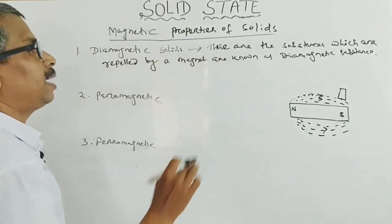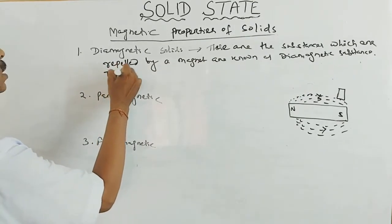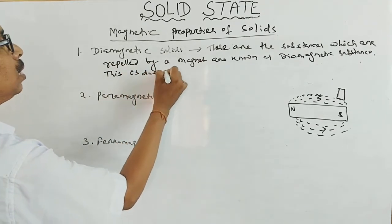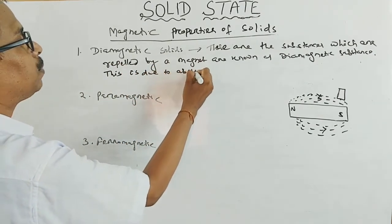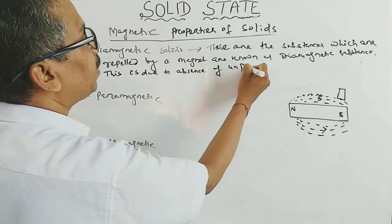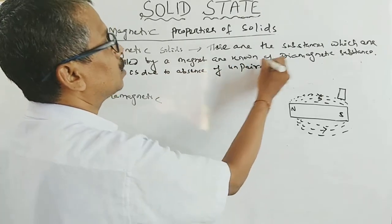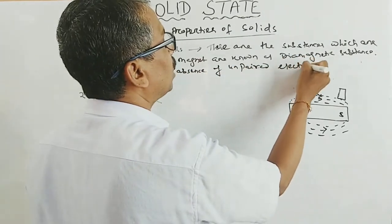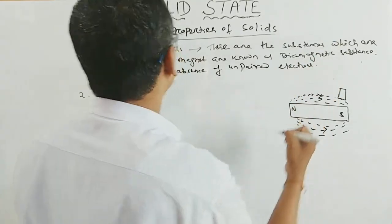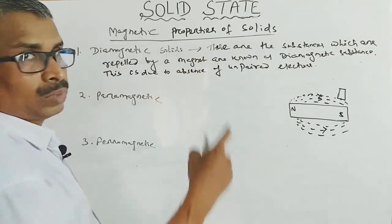This is due to the absence of unpaired electrons. Because there are no unpaired electrons, the substance will be repelled.